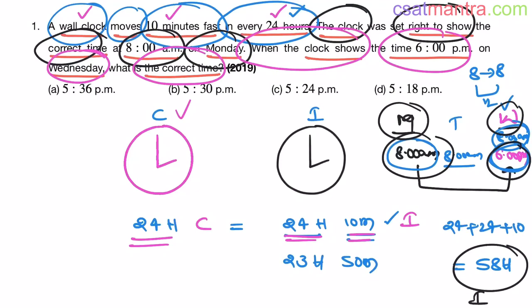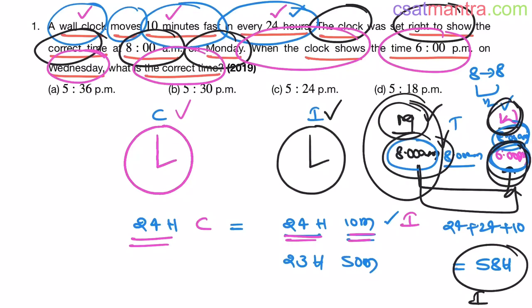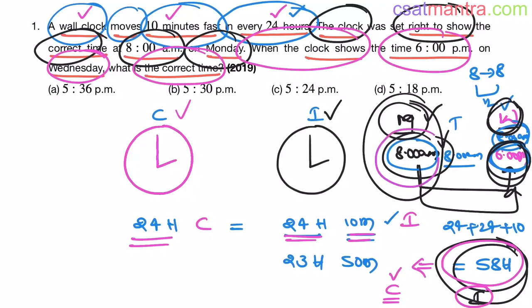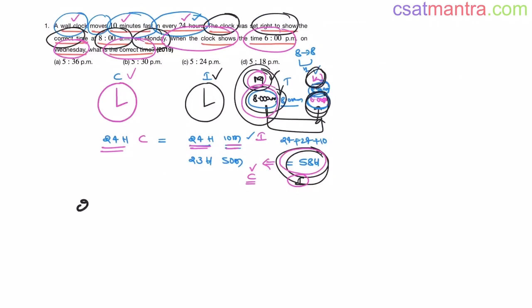This 58 hours is on the incorrect clock. We are on the incorrect clock — it was set right at 8am on Monday and it is now showing 6pm on Wednesday. So the time duration gap is 58 hours on the incorrect clock. Now I want to find out: 58 hours on the incorrect clock is equal to how many hours on the correct clock? If I can find that duration, I can add it to 8am on Monday to get the correct time.